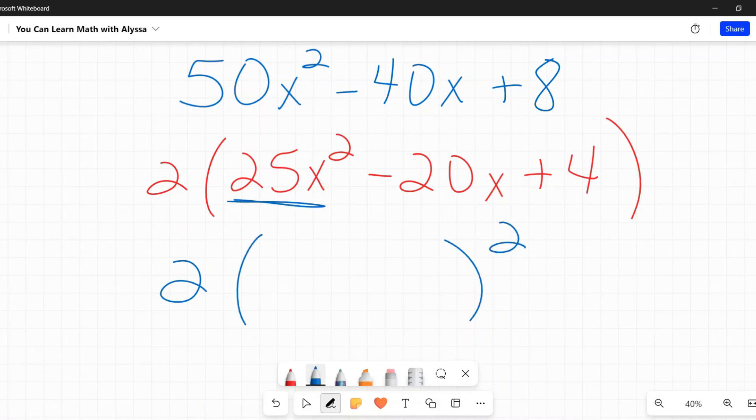Remember to bring this 2. Do not forget about that 2. Make sure it stays and is in your final answer. So what's the square root of 25x squared? Square root of 25 is 5. Square root of x squared is x. And my 4, square root of 4 is 2. And my sign, I look here before that middle term. It's negative. To double check, 2 times A times B. 2 times 5x is 10x. 10x times negative 2 is negative 20x. I've got my answer. 2 times 5x minus 2 squared.